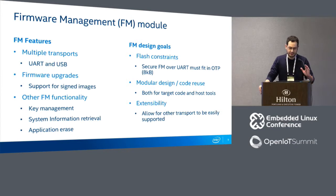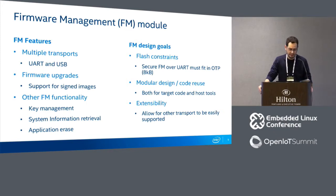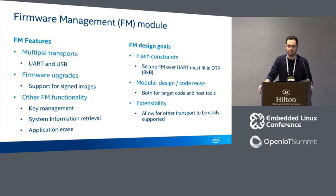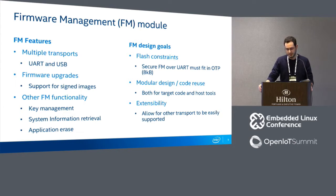The bootloader has firmware management functionality. It supports firmware upgrades, key management coming in the next release, and system information retrieval — so you can query the device to know which applications are installed, the partitioning, and so on. These firmware management features are available over two transports: both UART and USB, with USB only available for the C1000.